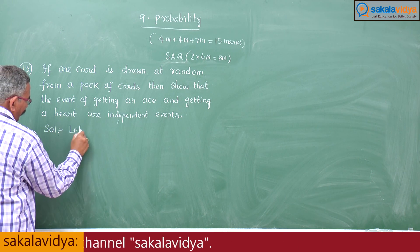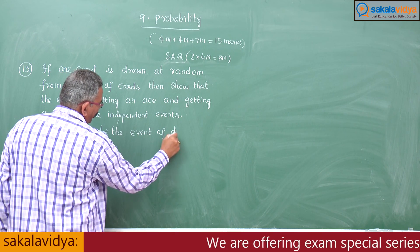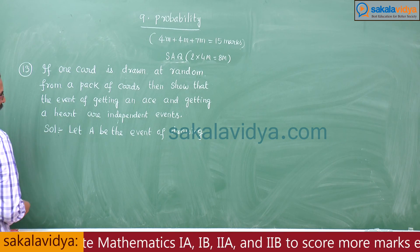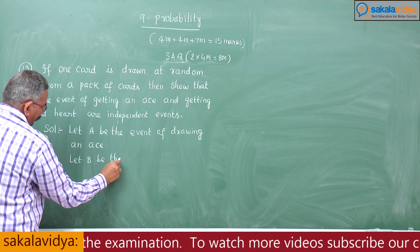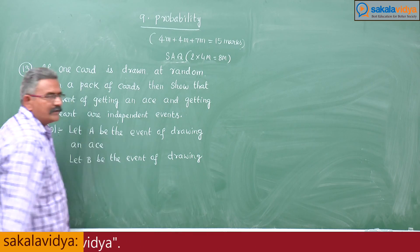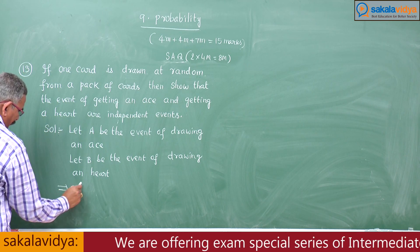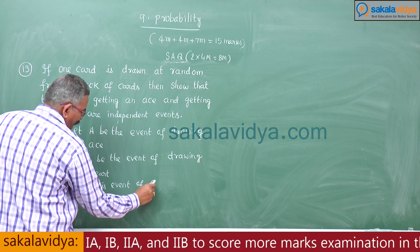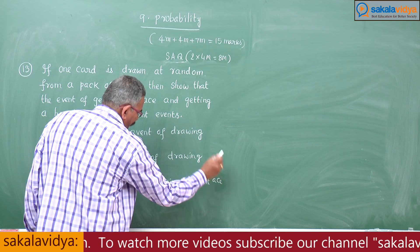Let A be the event of drawing an ace. Let B be the event of drawing a heart. That implies A intersection B is the event of drawing a heart ace, that is, a heart as well as an ace card — a heart ace.